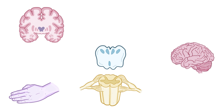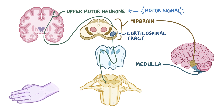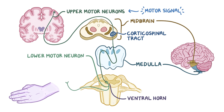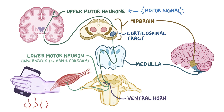Once your brain receives sensory information, it sends a motor signal down the upper motor neurons through the corticospinal tract in the midbrain, crossing to the opposite side at the medulla before continuing down the spinal cord. There, they synapse with lower motor neurons in the ventral horn, and the lower motor neuron axons leave the spinal cord to innervate the muscles of your arm and forearm, allowing you to lift your fingers and hand from the hot pan or pick up your cell phone. Hopefully this all happened quickly, so you haven't sustained major tissue damage.